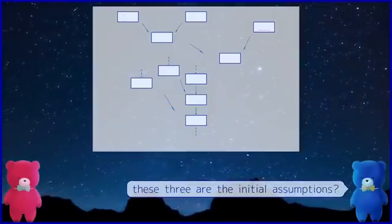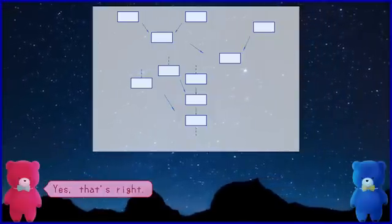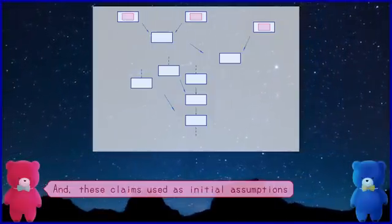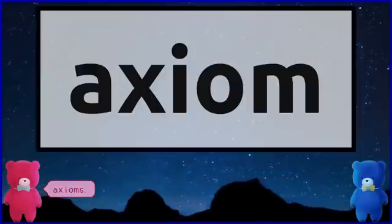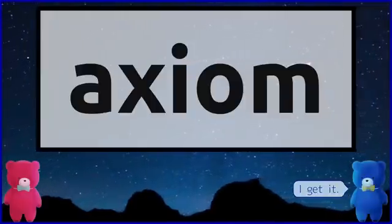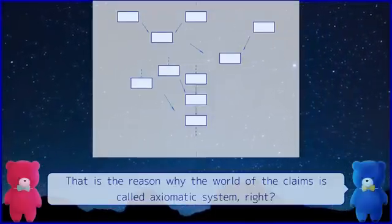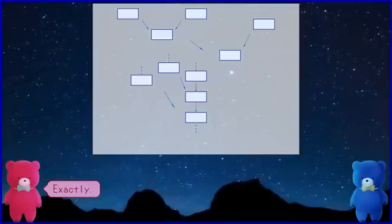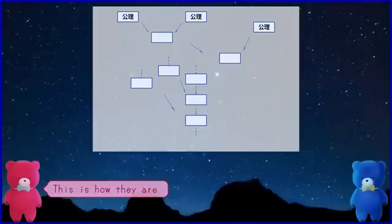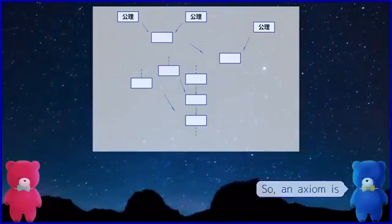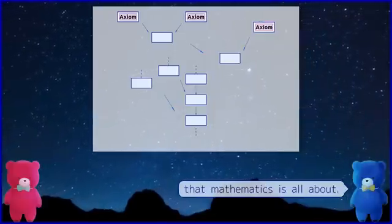So, these three are the initial assumptions. Yes, that's right. And these claims used as initial assumptions are called axioms. I get it. That is the reason why the world of the claims is called an axiomatic system, right? Exactly. I see. So, an axiom is the starting point of the axiomatic system that mathematics is all about.